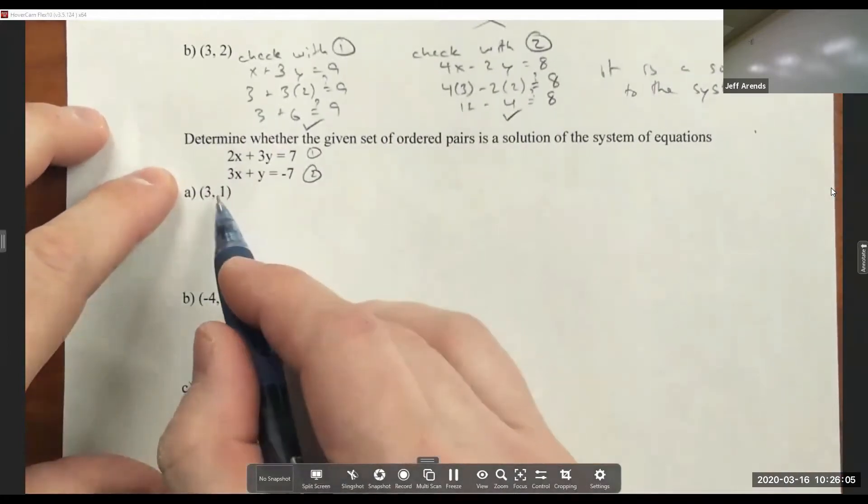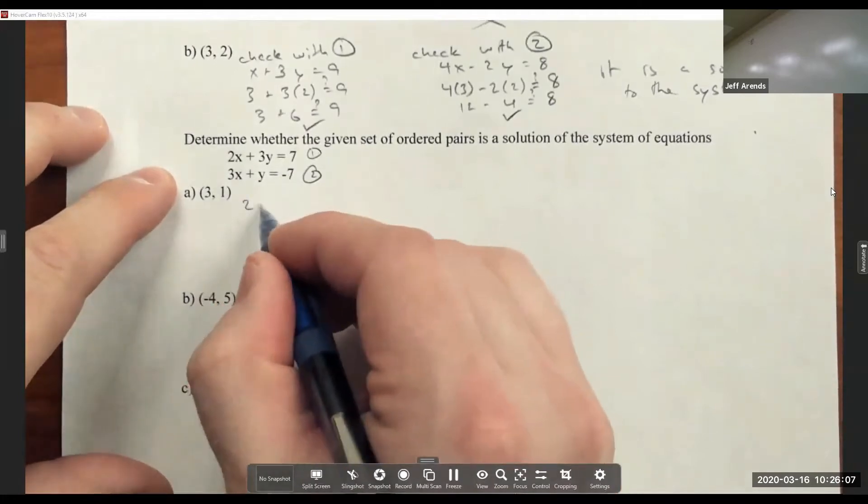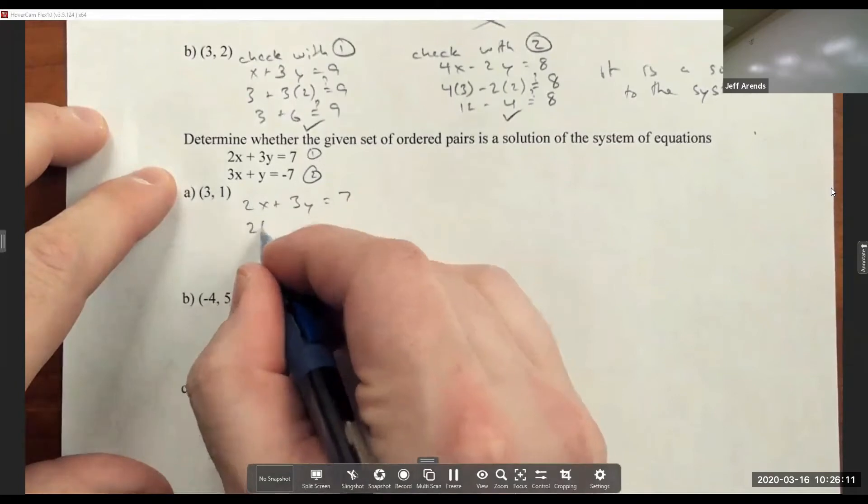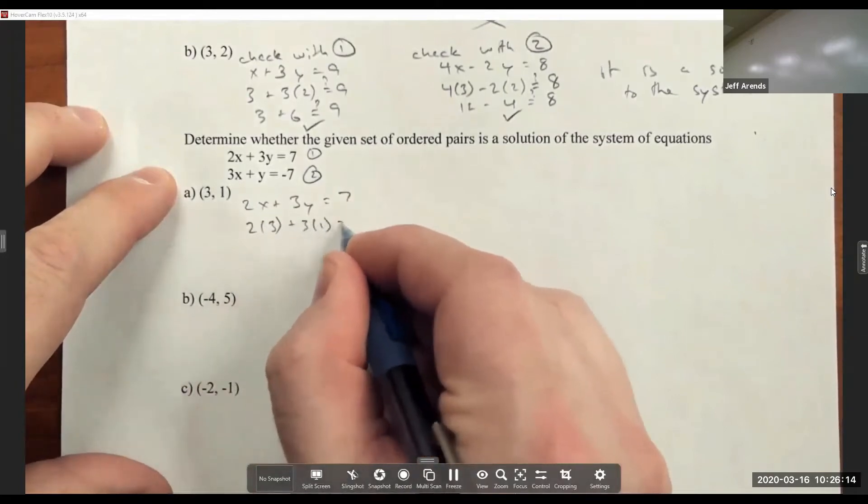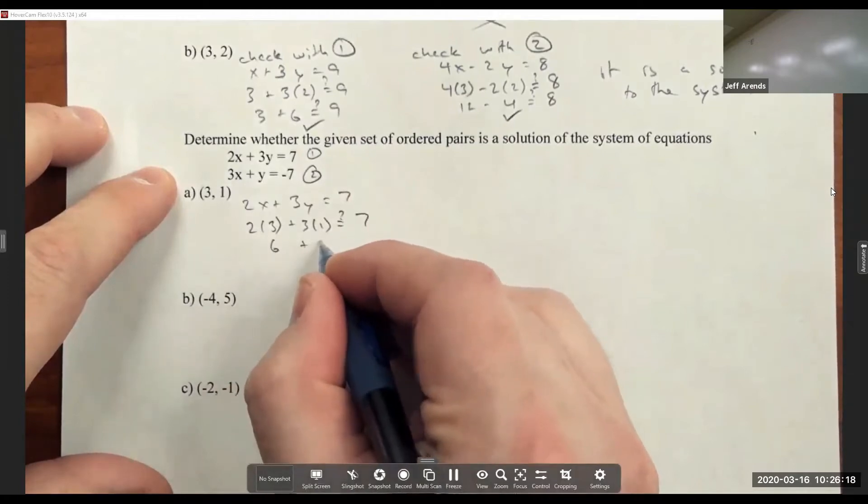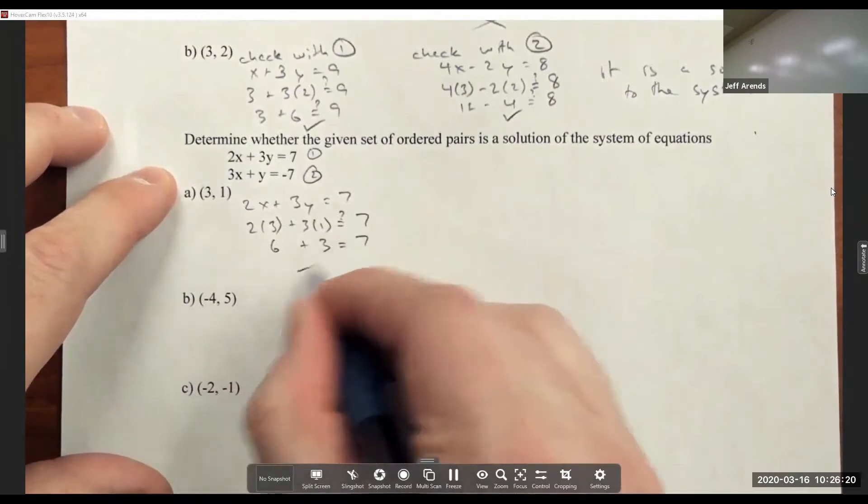Let's check the point (3,1). So we got 2x plus 3y equals 7 becomes 2 times 3 plus 3 times 1 question mark equals 7. 6 plus 3 equals 7 is not true.